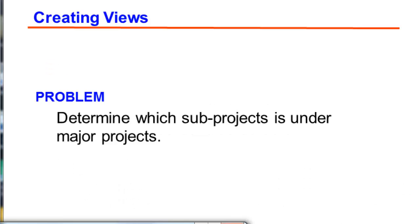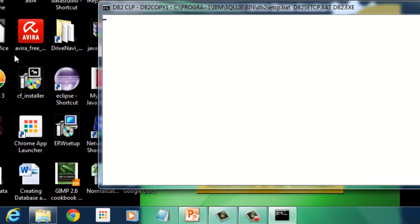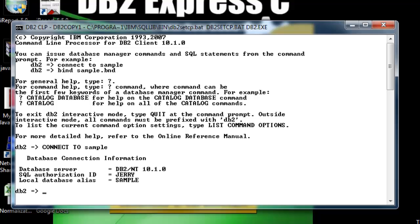Here we will determine which subprojects are under major projects. We will use the project table and this project references itself. We determine major projects from subprojects. Now let us first check the structure of our project table and connect to our database.